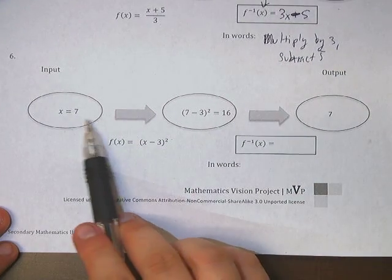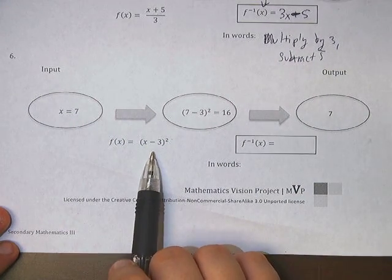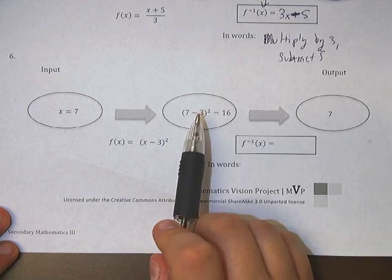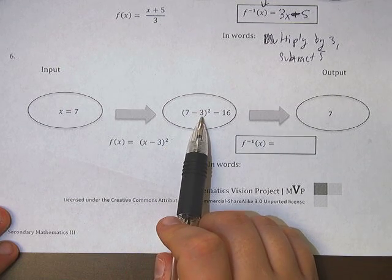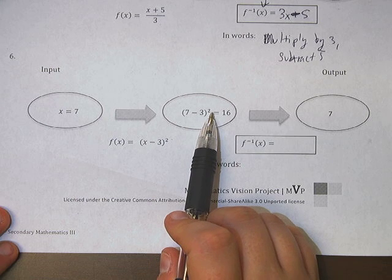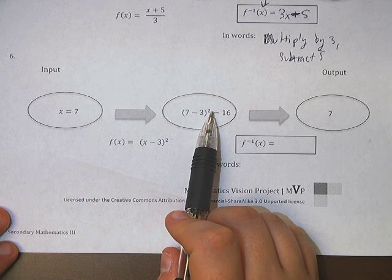There we go. And again, we're going to take this 4. Pop it in here. We end up with 3 times 4 is 12. Minus 5 is 7. Always worth it to check your work.